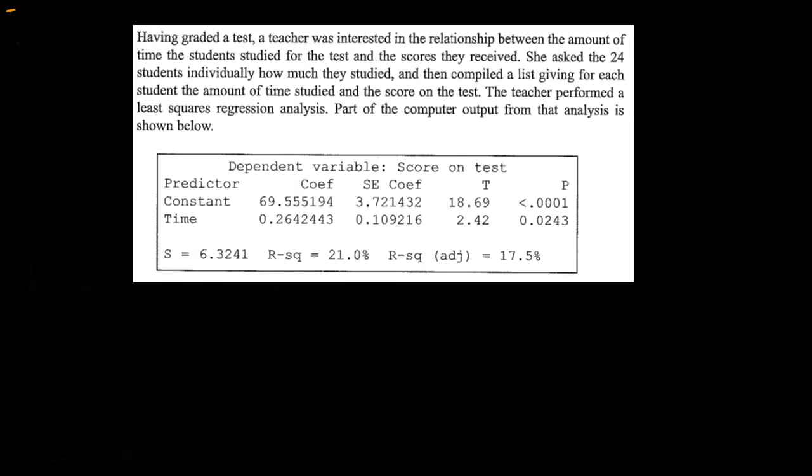Here's the problem we're going to use for this video. Having graded a test, a teacher was interested in the relationship between the amount of time the student studied for the test and the scores they received. She asked 24 students individually how much they studied, and then compiled a list giving for each student the amount of time studied and the score on the test. The teacher performed a least-squared regression analysis. Part of the computer output from that analysis is shown below.